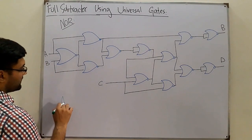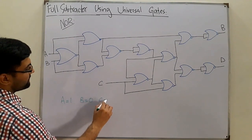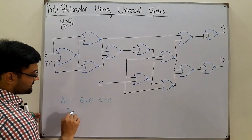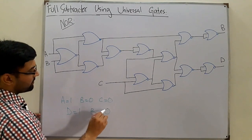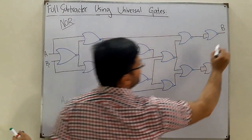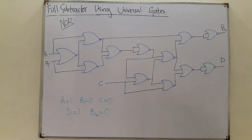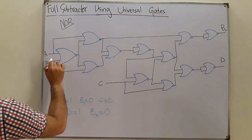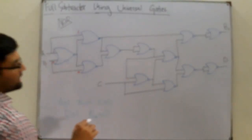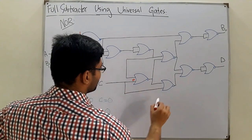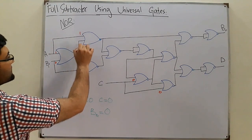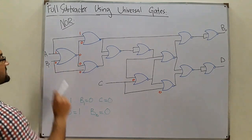For the NOR gate full subtractor, let's take A=1, B=0, C=0. This should give us a difference of 1 and a borrow of 0. With these inputs: A=1 goes to two gates, B=0 to two gates, and C=0 to two gates. 1 NOR 0 = 0, so we have zeros at those gate outputs.